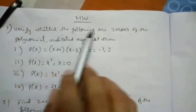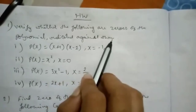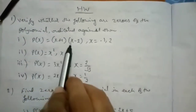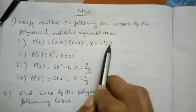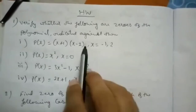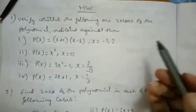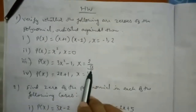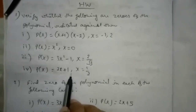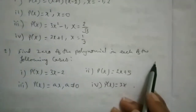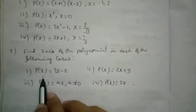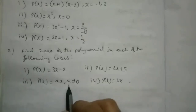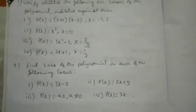Let's note down some homework problems. First: verify whether the following are zeros of the polynomial. p(x) equals (x+1)(x-2), where x equals minus 1 and 2. Find the zero of the polynomial in each of the following cases: (1) p(x) equals 3x minus 2, (2) p(x) equals 2x plus 5, (3) p(x) equals ax where a is not equal to 0, (4) p(x) equals 3x. Students, solve these questions in your homework book. Thank you.